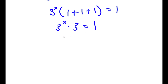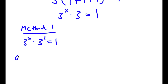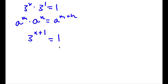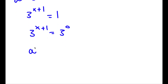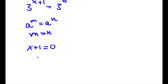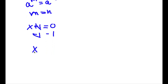From here I have two methods. For method 1: 3 is the same thing as 3 to the power of 1. Using the rule a^m times a^n equals a^(m+n), I get 3^(x+1) equals 1. Now 1 is the same as 3 to the power of 0, because anything to the power of 0 equals 1. So 3^(x+1) equals 3^0, meaning x plus 1 equals 0. Subtracting 1 from both sides, x is equal to negative 1.